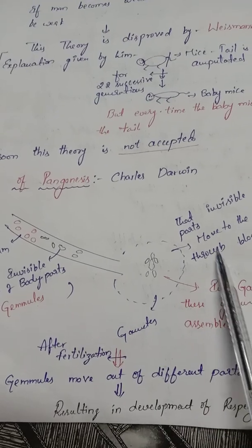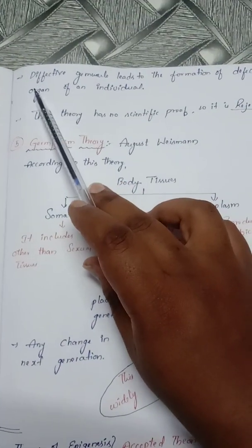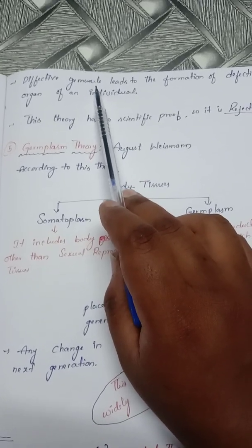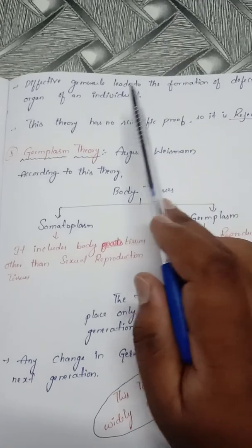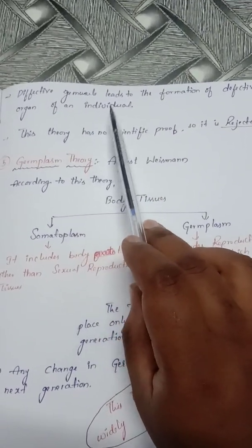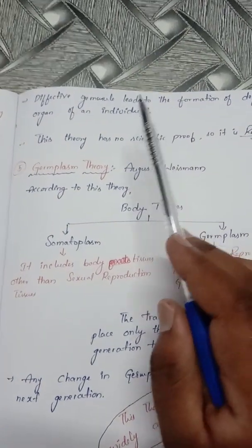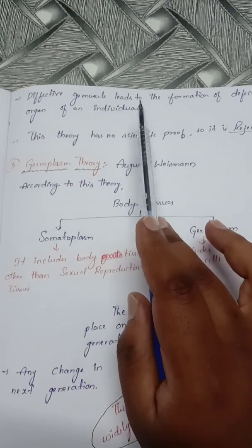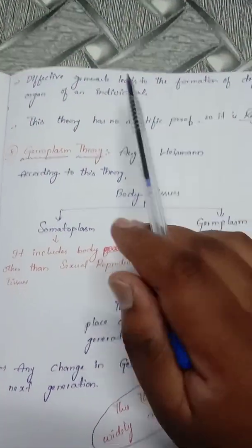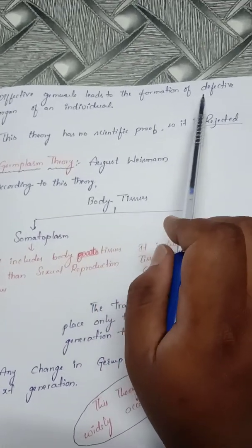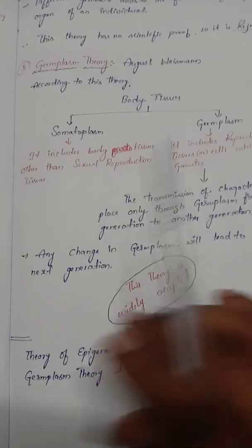The theory of pangenesis also does not have scientific proof and is rejected. A defective gemmule — that is, an invisible body part that is not good — leads to the formation of a defective organ. For example, if a progeny does not have a good hand, ear, or nose, it means they received a defective gemmule. So the theory of pangenesis is rejected.